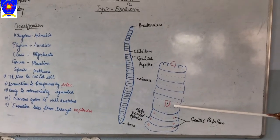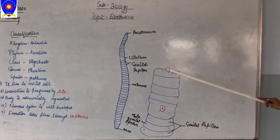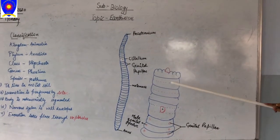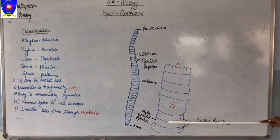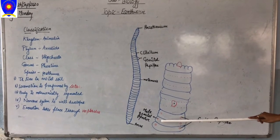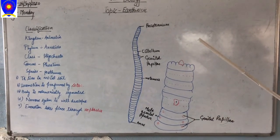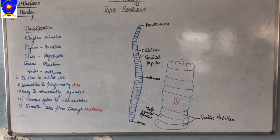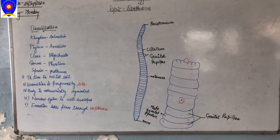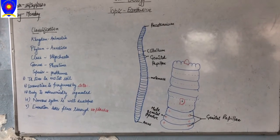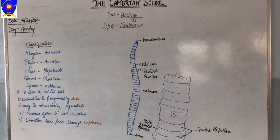This one is the enlarged part of the earthworm. This one is the clitellum, which I have shown you here. This one is the prostomium, and these two are the genital papillae. And this one is the male genital aperture. So, this was basically the structure of the earthworm. Wherever you have to write about the earthworm, you can write these comments and the classification.